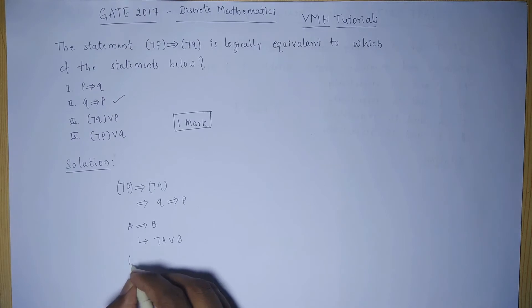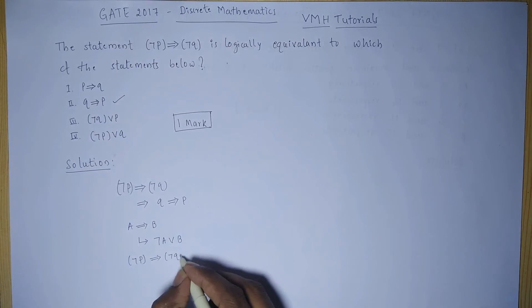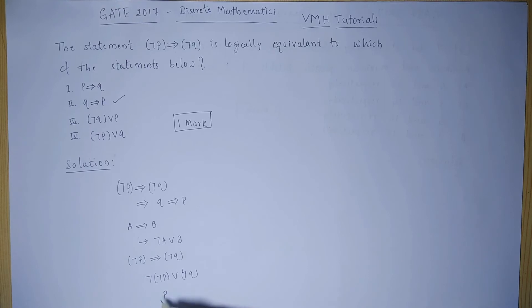Hence, the given statement, that is, negation of P implies negation of Q can be written like negation of negation P or negation Q. Now, if you take this particular negation set from De Morgan's law, negation negation will get cancelled, that is, it will remain with P or negation of Q.